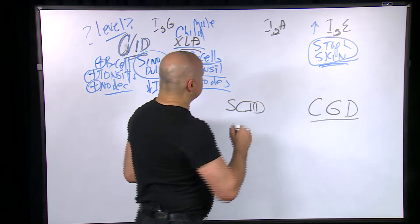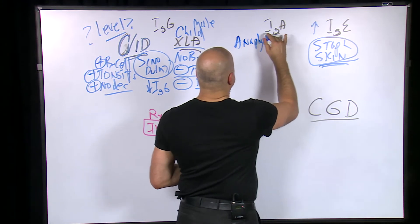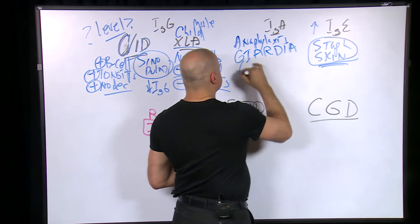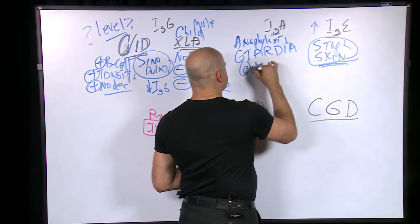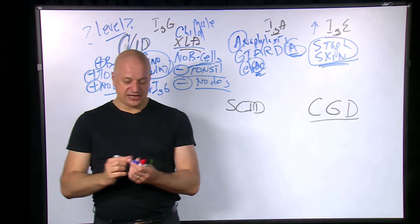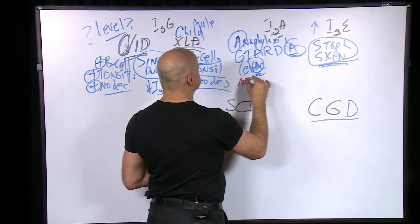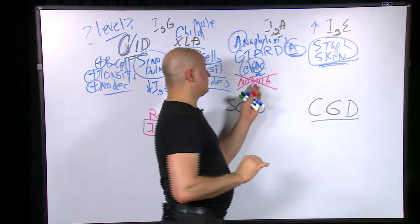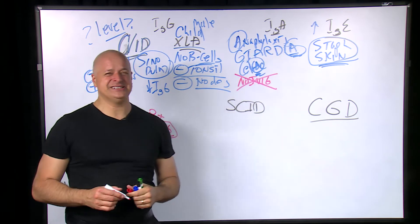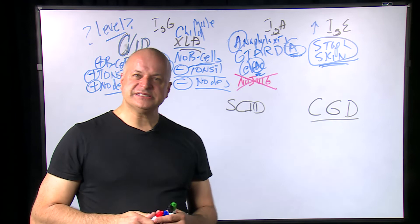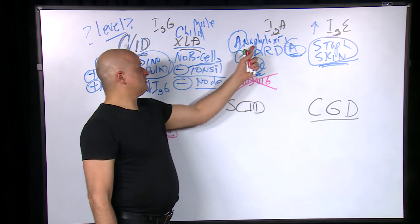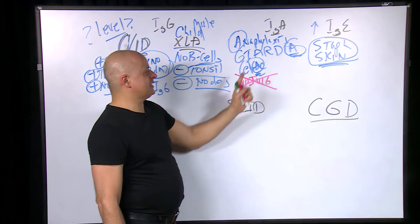IgA deficiency gives a person anaphylaxis when they receive blood that has IgA in it. It also causes giardia infections, celiac disease, and atopic disease. When you try to treat IgA deficiency with intravenous immunoglobulins, it can actually make it worse because IVIG contains a small amount of IgA. So there is nothing that can be done for IgA deficiency — IVIG makes it worse.